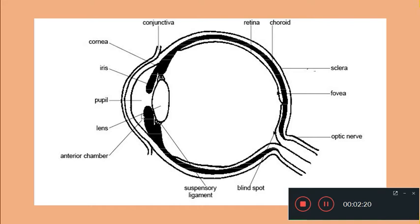This is actually a circular curtain with a circular outline and this is called as the iris. At the center of the iris is an aperture called as the pupil. Light passes through the transparent conjunctiva, then the cornea, and traverses through the pupil where it comes in contact with the lens. This eye lens is held in position by suspensory ligaments and the lens has optical properties.